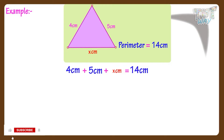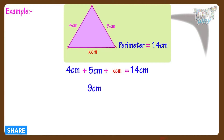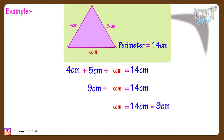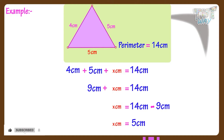Now let's solve this equation. 4 plus 5 we get 9, so 9 centimeters plus x equals 14 centimeters. Solving the equation, x equals 14 centimeters minus 9 centimeters, and so x equals 5 centimeters. So the third side of the triangle is 5 centimeters. We need to subtract the sum of two sides from the perimeter to get the length of the third side.